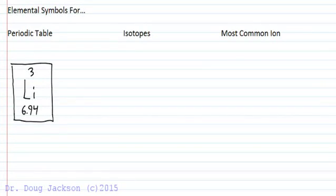Let's talk about elemental symbols in three scenarios. One where we're reading the periodic table, another where we're looking at isotopes of the same element, and then finally when we're talking about the most common or any ion of an element.